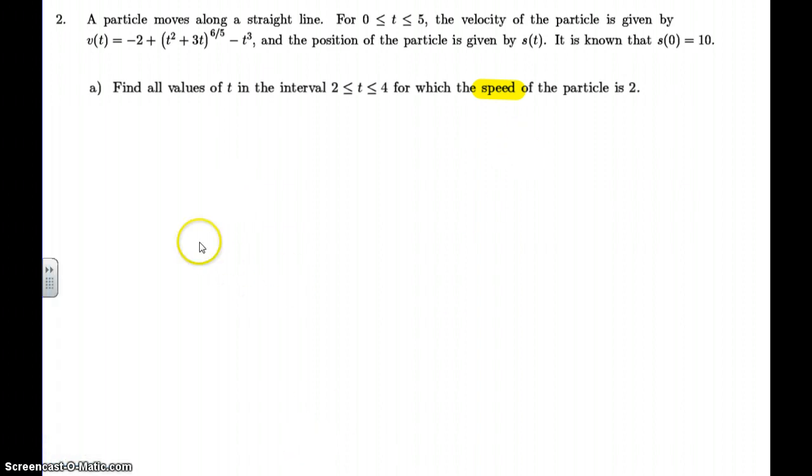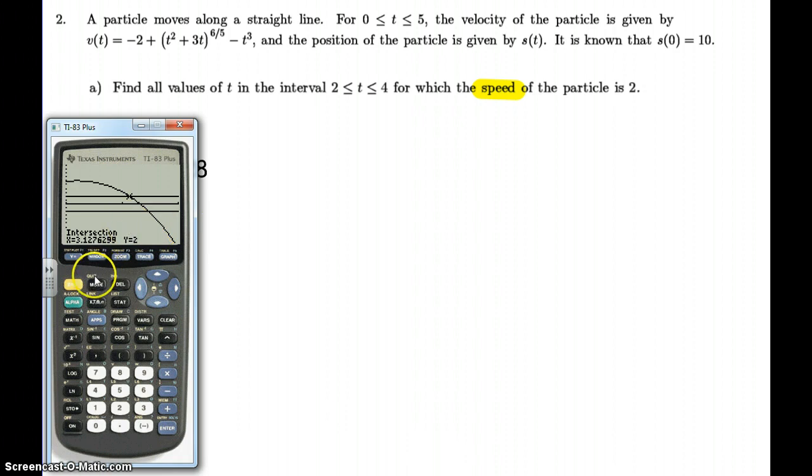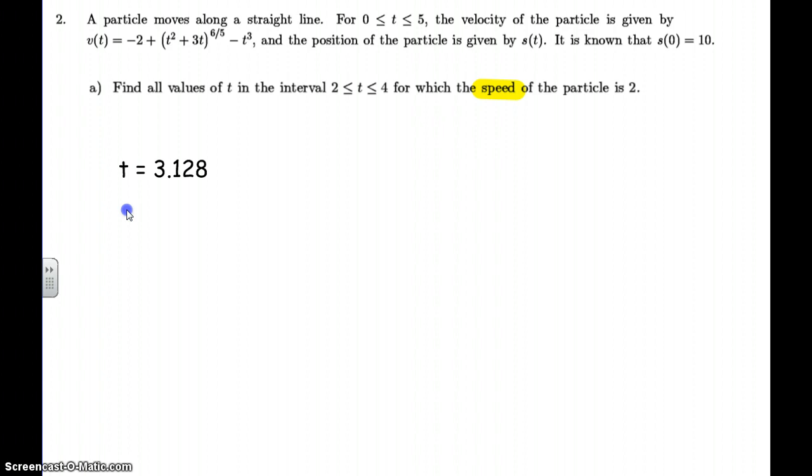Let's kind of record that over here. Bring the calculator back up. Okay, do it in the other function as well. So second trace, intersection. First curve y1. Now we're going to cursor down to y3 for the second function guess. And there we get 3.473.